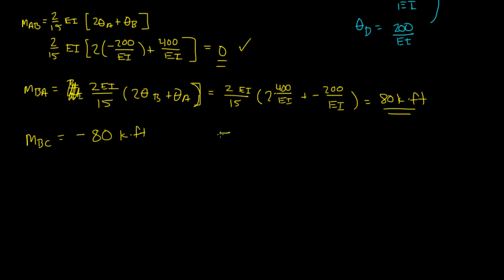And remember, this was that joint B, and we had this and this, and this was MBC, this was MBA. MBA looks like it's going the right direction because it's a positive. MBC is actually negative, so it's actually going this way. This makes sense, right? You have 80 kip foot going one way, and you have 80 kip foot going the other way. And that means the joint B is in equilibrium.